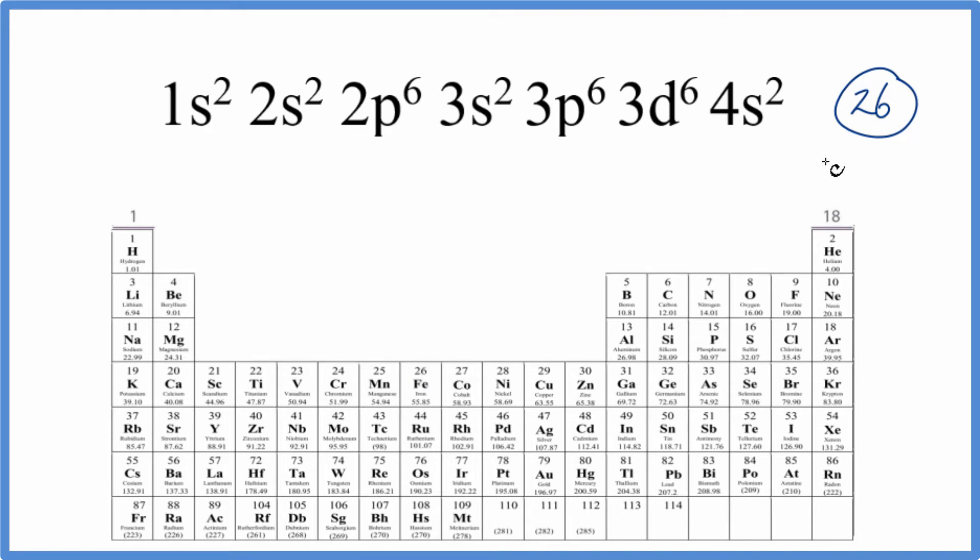will equal the number of electrons. So we find the element with atomic number 26, iron right here. This is the element that's represented by this electron configuration.